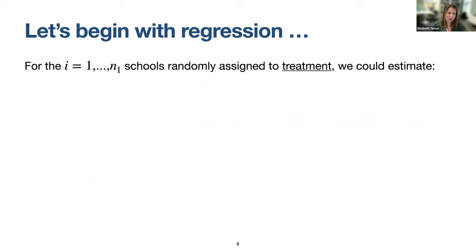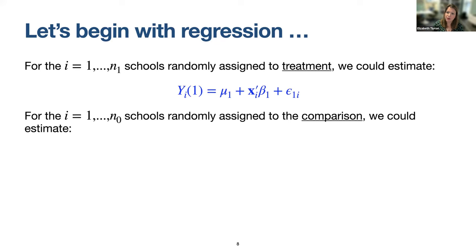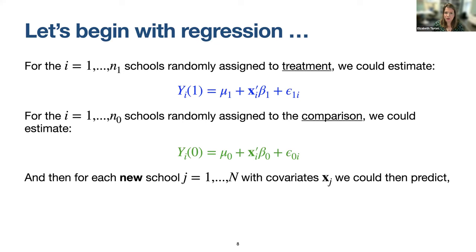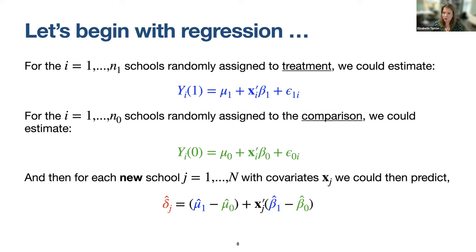I'll use a parametric framework because it allows nice closed-form expressions. We'll begin with a regression model using two separate regressions: for those in the treatment arm, we predict outcomes using a set of covariates, and we do the same in the comparison arm with a different regression model. Then for a new school, given their covariate values XJ, we combine the estimated coefficients from the experimental data with the new school's covariates to get a prediction.